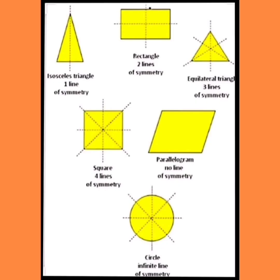Now, look at these shapes. The first one is an isosceles triangle — an isosceles triangle has one line of symmetry. A rectangle has two lines of symmetry. An equilateral triangle has three lines of symmetry, as all three sides are equal. A square has four lines of symmetry. A parallelogram has no line of symmetry, because the two parts formed do not fit exactly over each other. And a circle has infinite lines of symmetry.